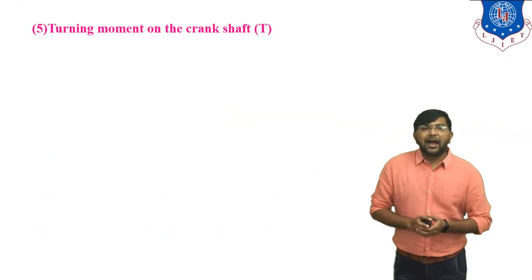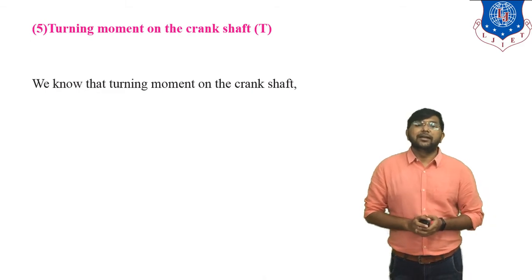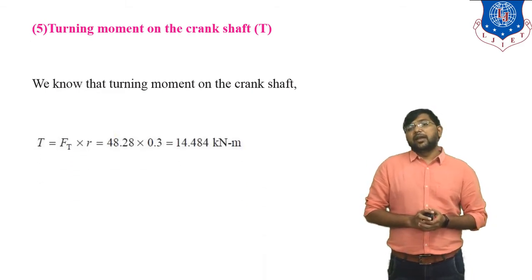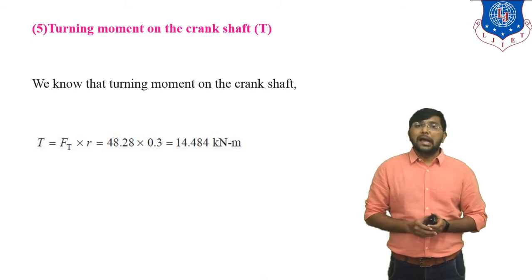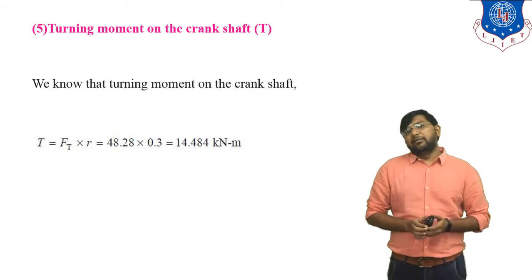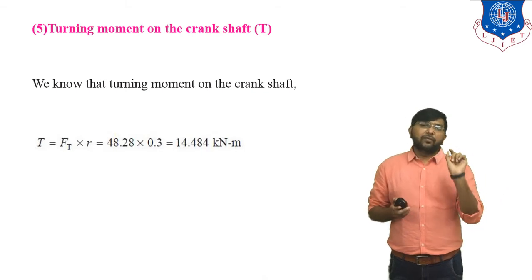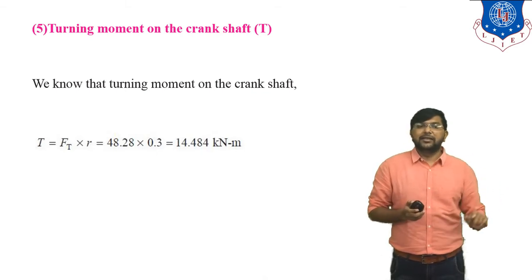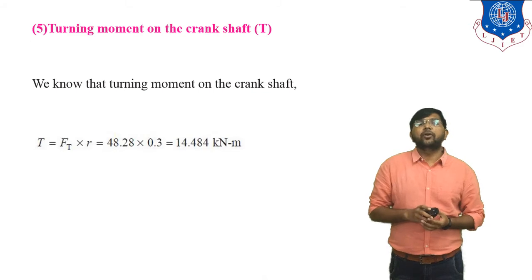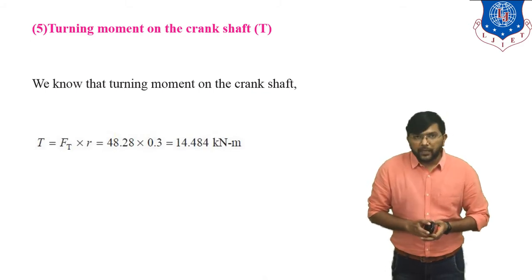The turning moment on the crankshaft (torque) = F_t × R. We have F_t = 48.28 kN and R = 0.3 m. Therefore torque = 48.28 × 0.3 = 14.484 kN·m.